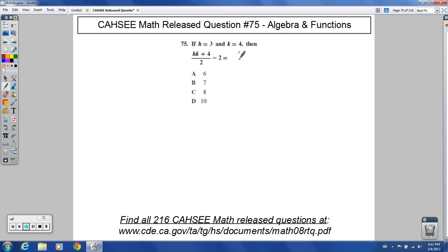Let's plug in the numbers. h is 3 and k is 4, and we have another plus 4 after that. This is all divided by 2, and then you have minus 2.